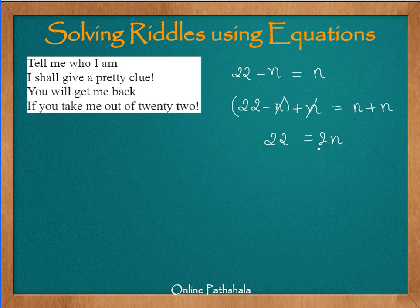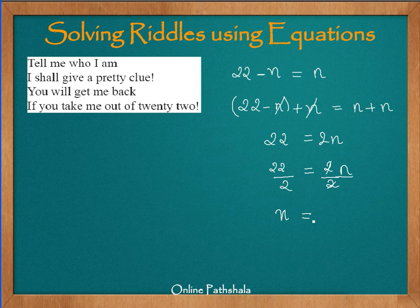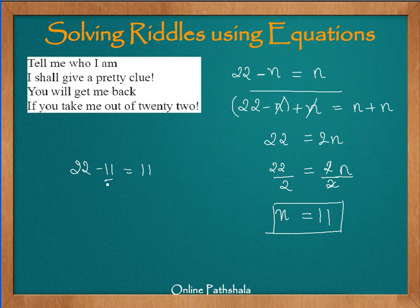We divide both sides by 2. So 22 divided by 2 gives us 2 divided by 2 times n. The 2s cancel out and we get n equals 11. This is our number and it satisfies the equation. So if we do 22 minus 11, it gives us 11, which is the number itself.